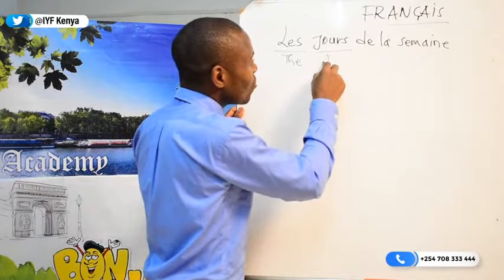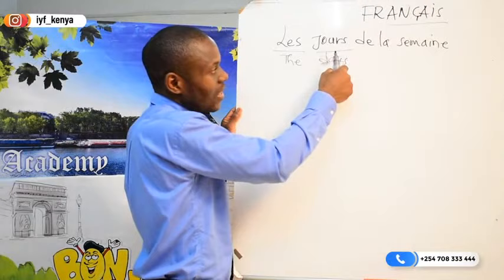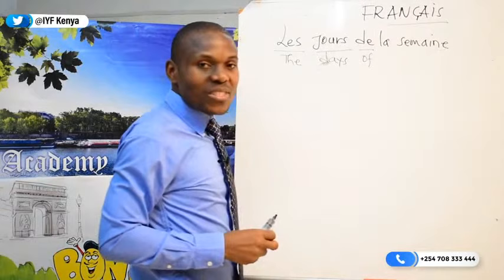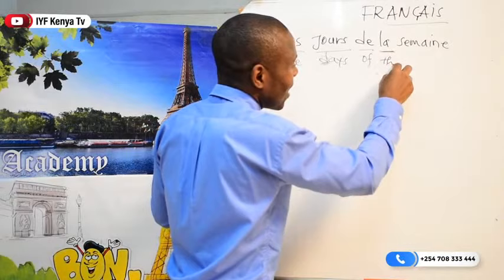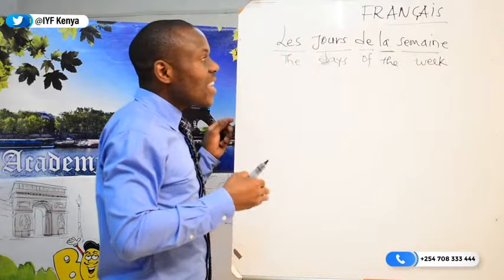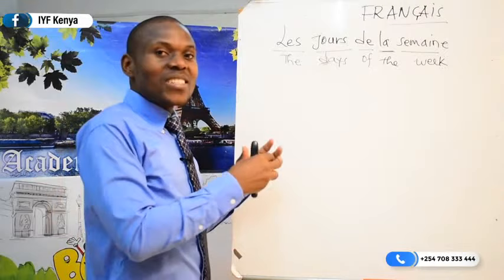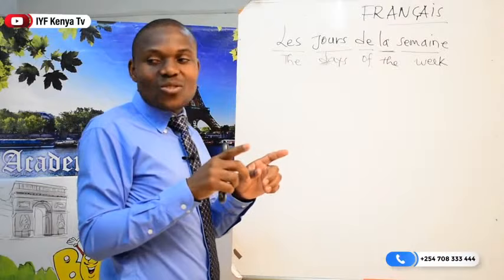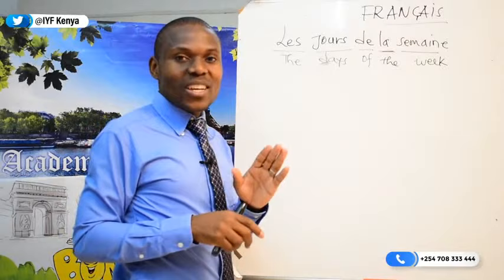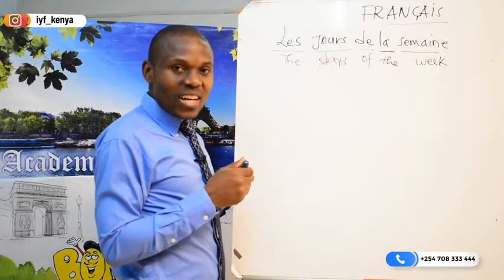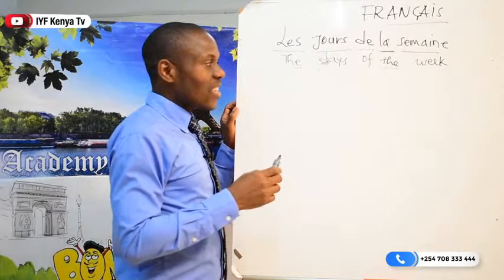'Jour' means 'day.' Because there are many, we add 's' — so you have 'days.' Then 'de' sounds like 'of,' and then 'la' appears again, and then 'semaine' means 'week.' So it is like 'the days of the week.' In this context this direct translation gives exactly the same meaning in English, but sometimes it can't give exactly the same meaning because these are two different languages. You may wonder why we have 'le' and 'la' here.